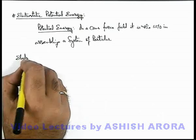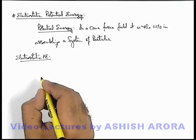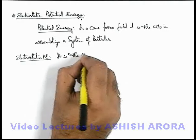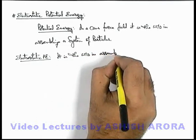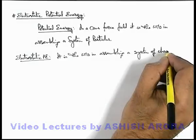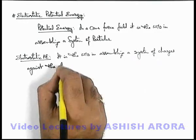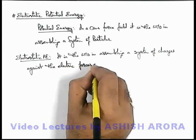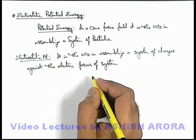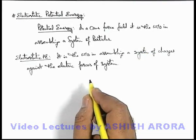Now let's define what we mean by electrostatic potential energy, which is defined for a system of charged particles. We can simply state that it is the work done in assembling a system of charges or charged particles against the electric forces of the system. Whatever work we do in assembling the system, that total energy supplied will be stored in the form of electrostatic potential energy of the system.